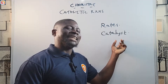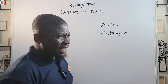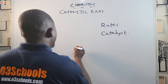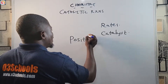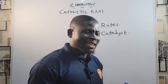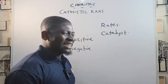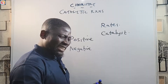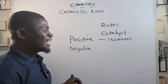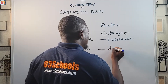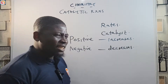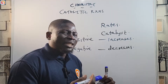A catalyst may be positive or negative. A positive catalyst is one that increases the rate of a chemical reaction, while a negative catalyst is one that decreases the rate of a chemical reaction.